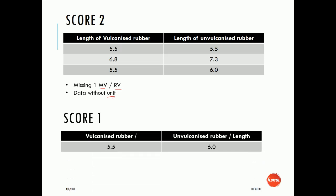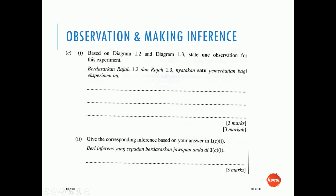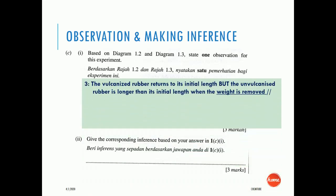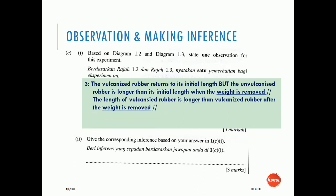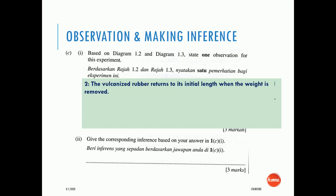Based on Diagrams 1.2 and 1.3, the observation the student can write is: the vulcanized rubber returns to its initial length but the unvulcanized rubber is longer than its initial length when the weight is removed. The student can also write: the length of the vulcanized rubber is longer during the weight hung, and the vulcanized rubber returns to its initial length when the weight is removed. Mentioning that the rubber lengths are different or stretchable is the idea mark for score 1.